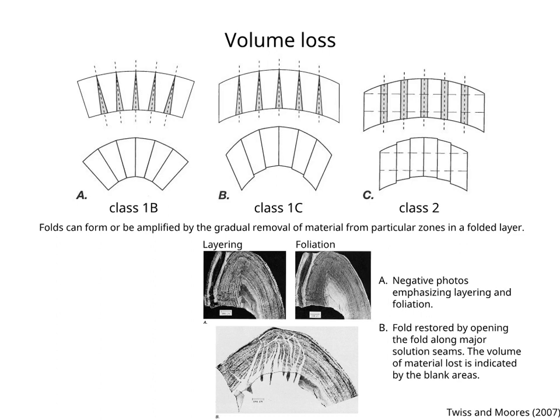shows negative photos of a fold, emphasizing layering and foliation. Section B shows the fold restored by opening it along major solution seams. The volume of material lost is indicated by the blank areas.